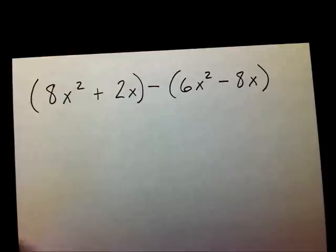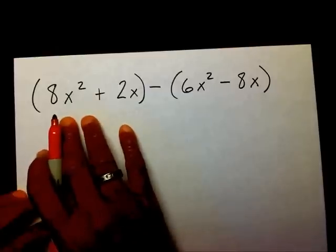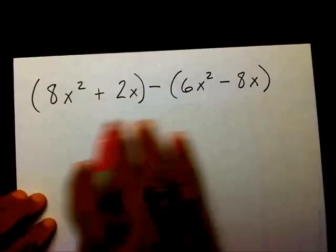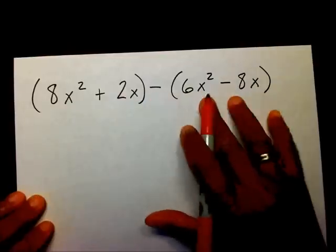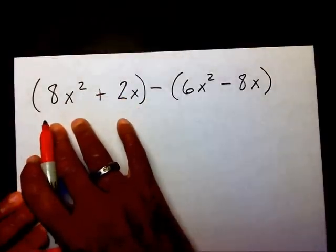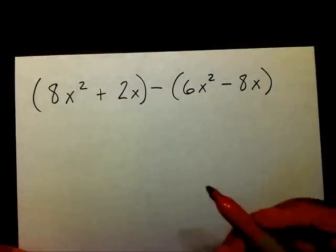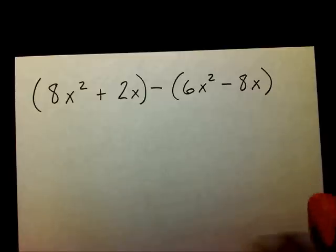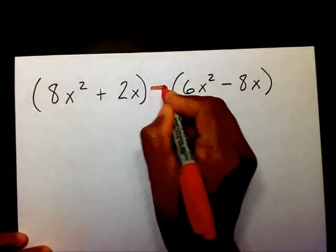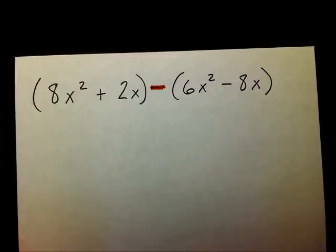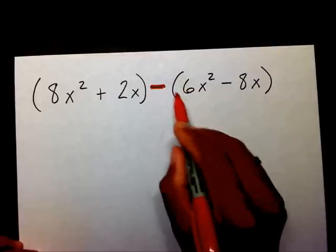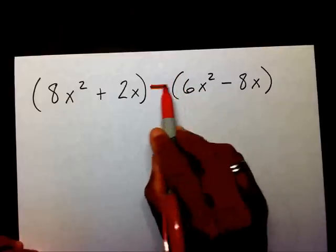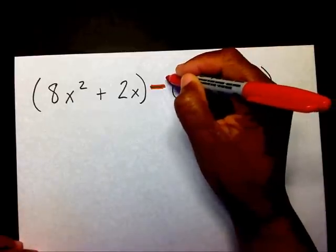When you are subtracting any objects, you have something to start with and then you take something away. So I have this polynomial to start and I'm going to subtract this polynomial from this polynomial. The process is extremely simple. The first thing you need to notice is that we are subtracting, so whenever you have a subtraction sign right beside the parentheses, we need to imagine that there is a negative 1 right here.